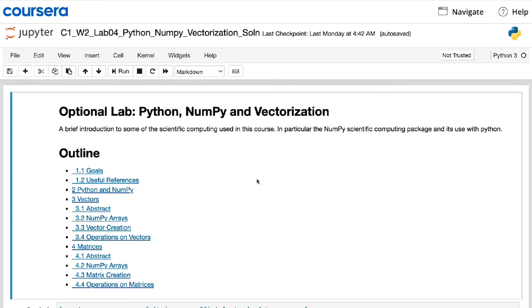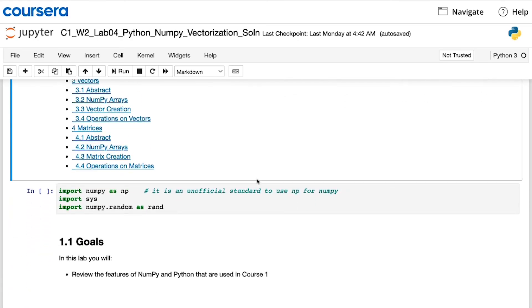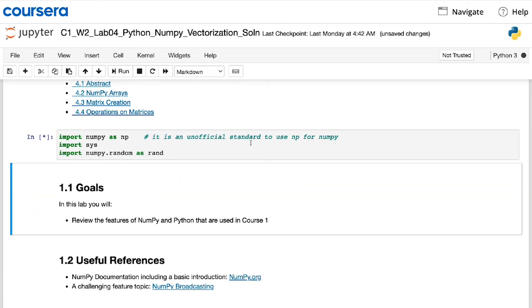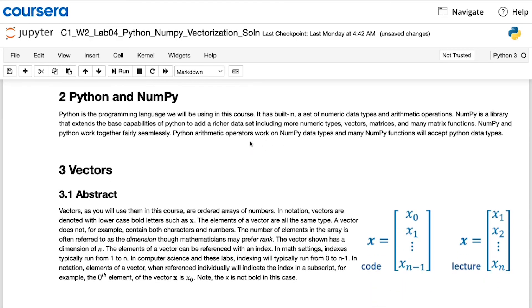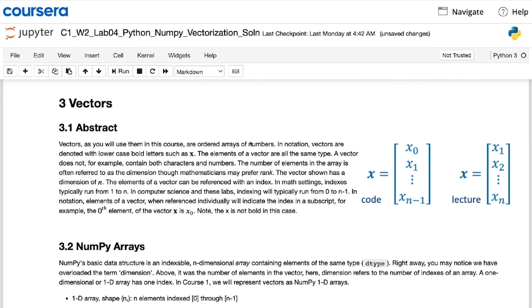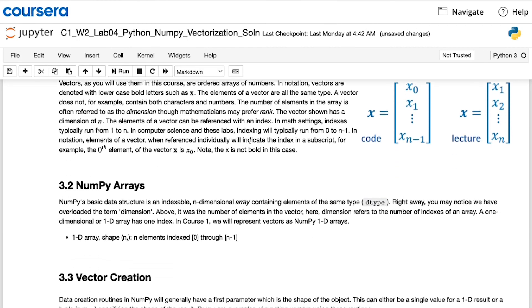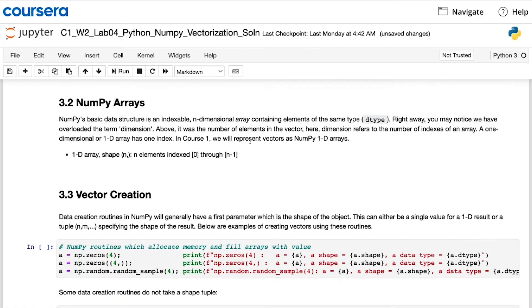In the optional lab that follows this video, you'll see an introduction to one of the most used Python libraries in machine learning, which we've already touched on in this video, called numpy. You'll see how to create vectors in code, and these vectors, or lists of numbers, are called numpy arrays.